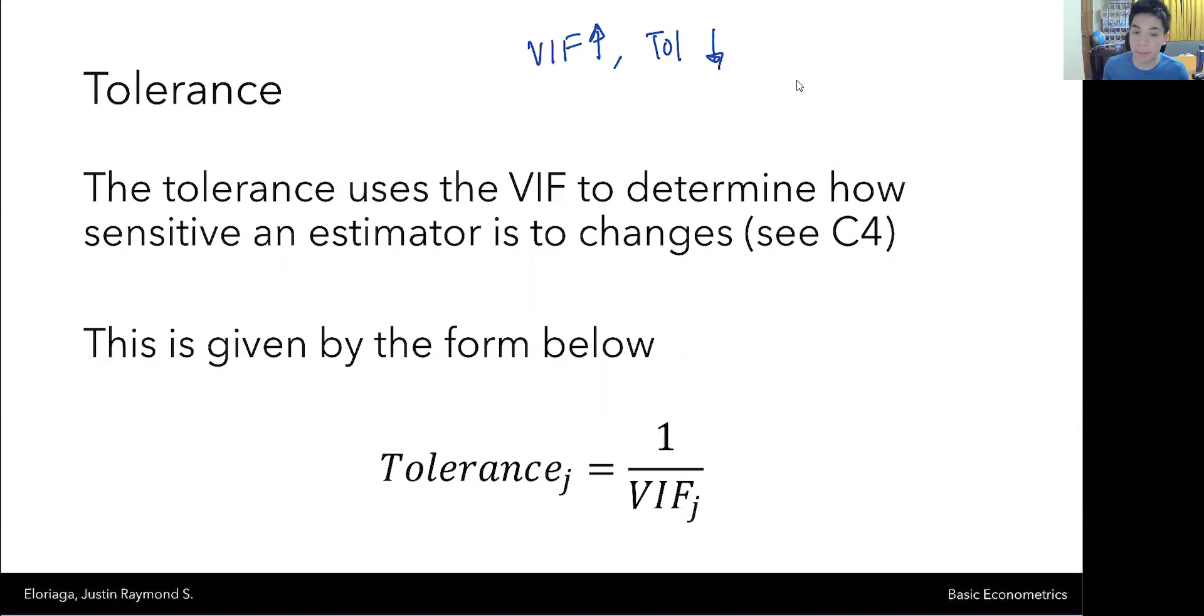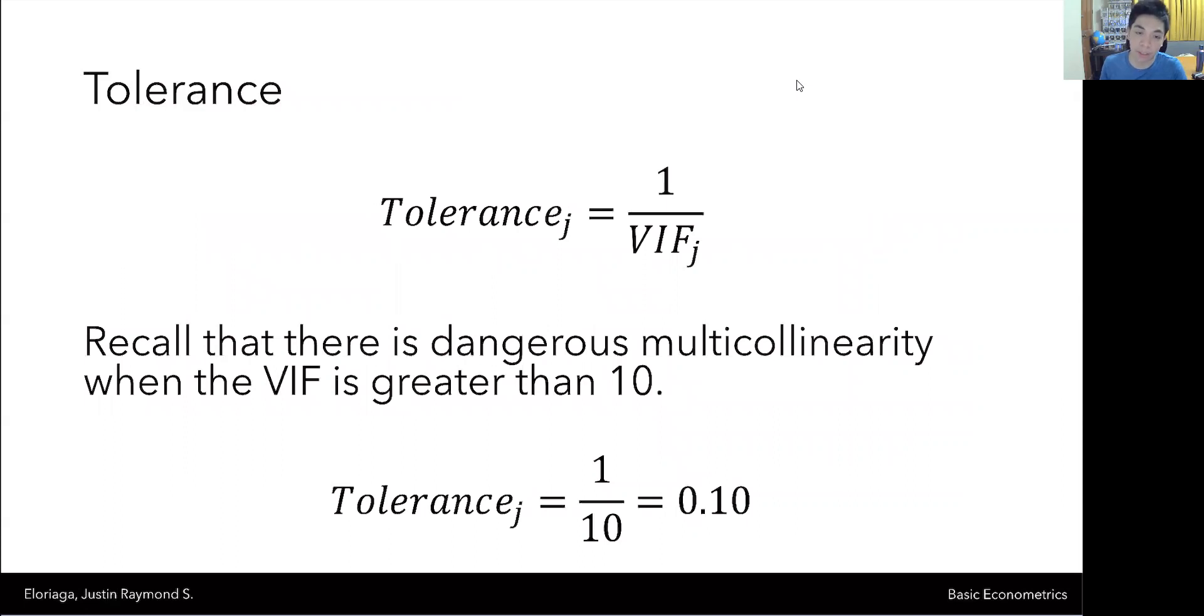And because we use the same threshold for the VIF, the VIF's threshold is 10. Therefore, the threshold that we have for dangerous multicollinearity in terms of tolerance would just be equal to 1 over 10 or 0.10. So any value lower than 0.10 indicates very low tolerance, which means that the estimator is extremely sensitive to small changes. A tolerance less than 0.10 would suggest dangerous multicollinearity because when it is less than 0.10, it means that VIF is greater than or equal to 10.